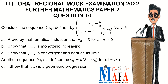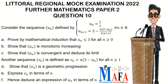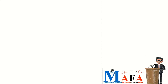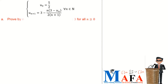Further parts ask: show that v_n is a geometric progression; express v_n in terms of n; and hence deduce an expression for u_n in terms of n. The first part is asking us to show that u_n is less than or equal to 3 by mathematical induction for all n greater than or equal to 0.